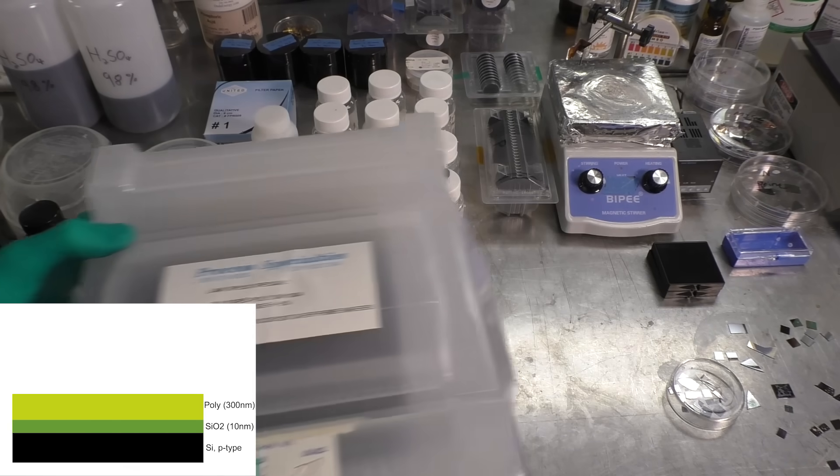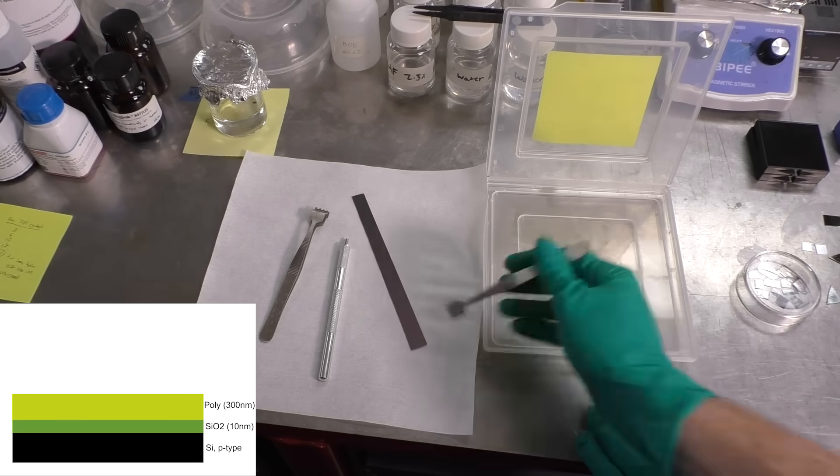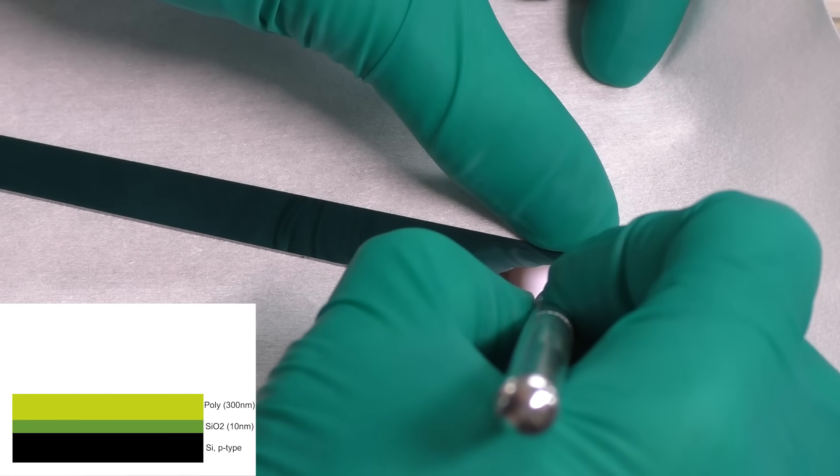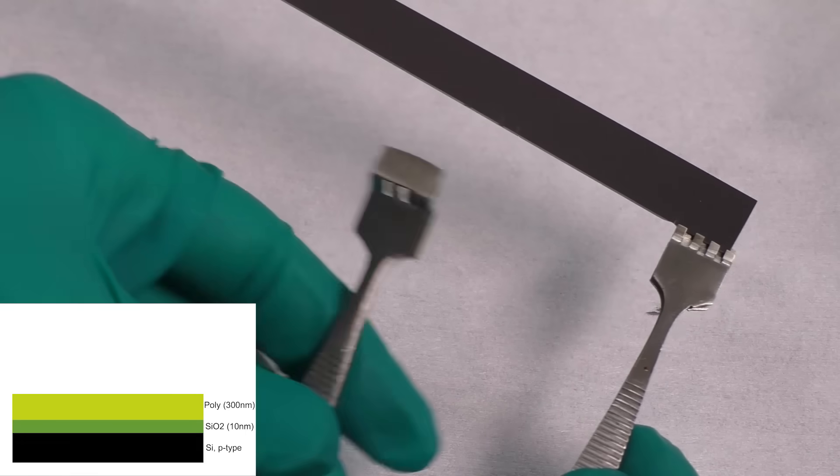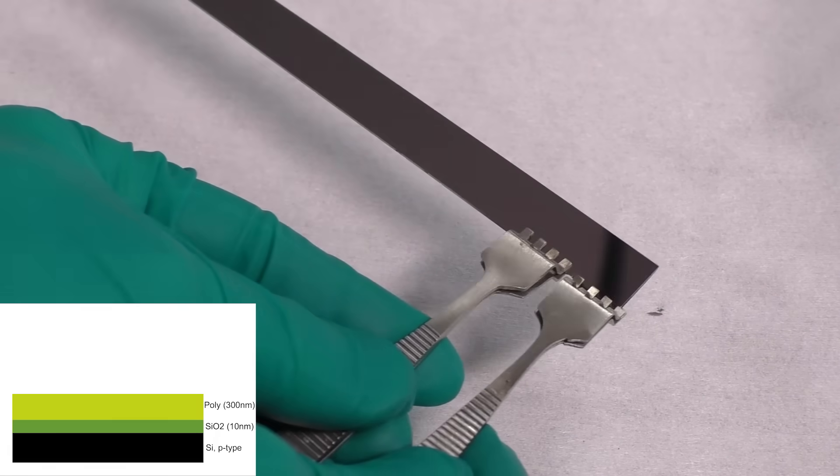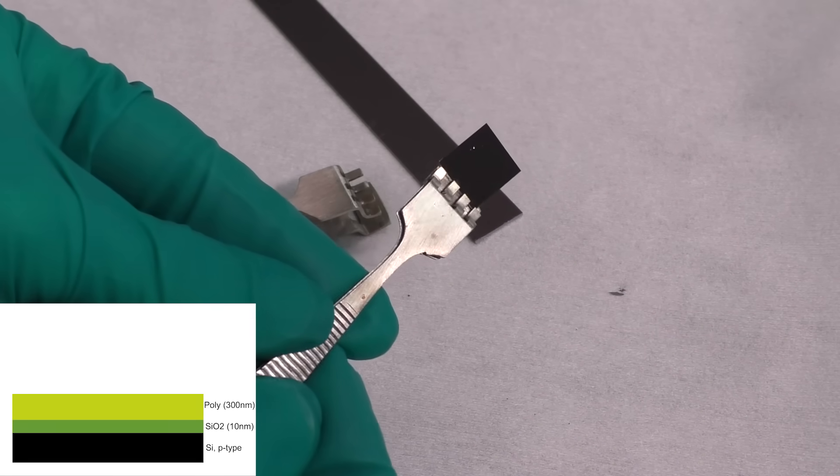I start with a lot of 200mm wafers that have some pretty specific starting parameters. They're way too big, so I dice them up using a diamond scribe into smaller bits. I normally do about half-inch squares like this, but I can process larger things up to about 2-inch wafers.